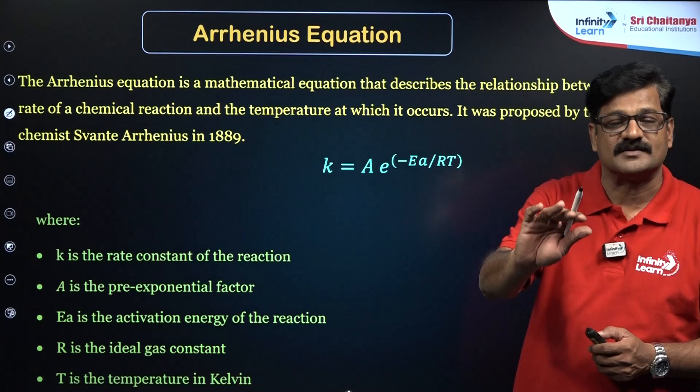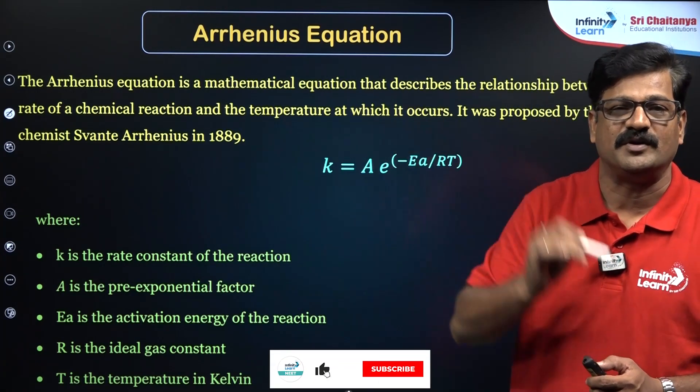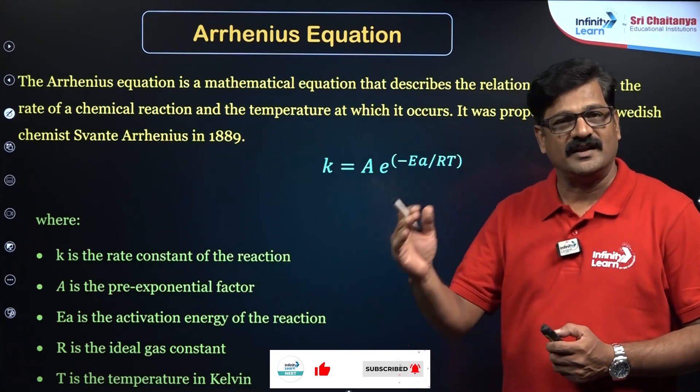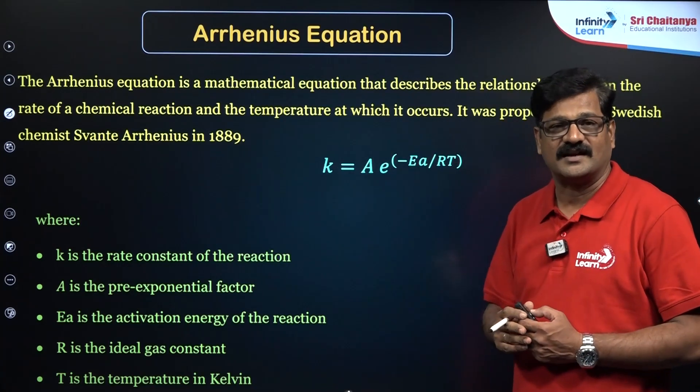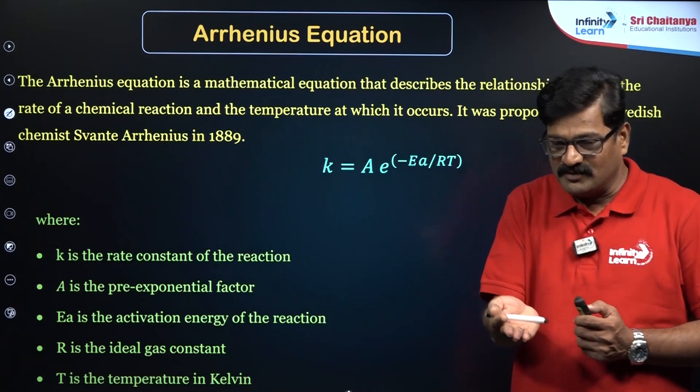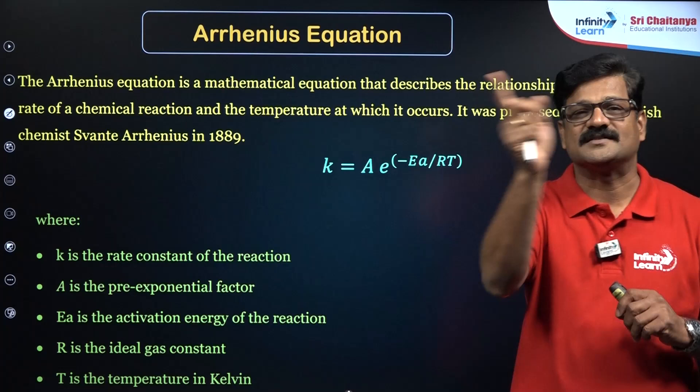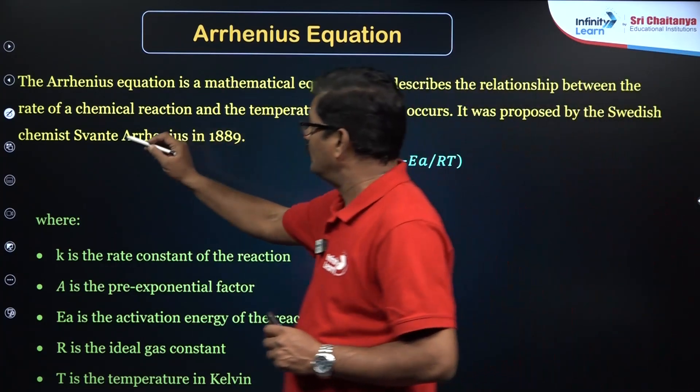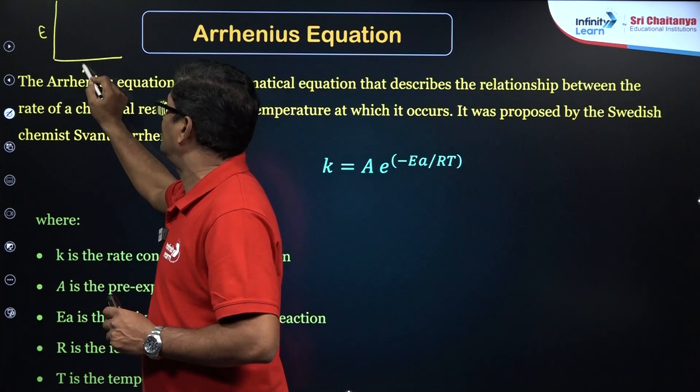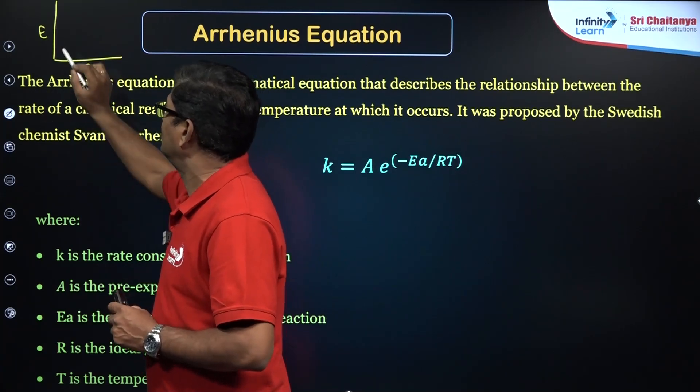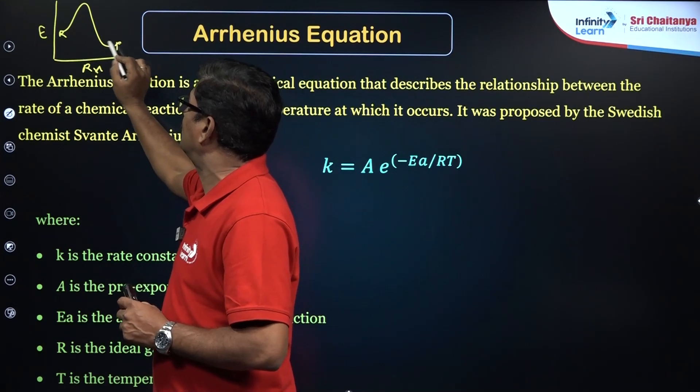What is k here? k is the rate constant. It is a specific rate constant, a measure of speed of reaction. A is the frequency factor. Ea is activation energy, the minimum amount of energy that is required to proceed the reaction, for reactants to be converted into product. When a reaction is going on, the energy potential energy and the reaction progress is given, and the reactant should reach certain minimum amount of energy to convert into the product.